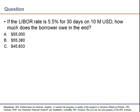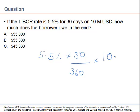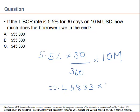Question: If the LIBOR rate is 5.5% for 30 days on a $10 million loan, how much does the borrower owe? Since LIBOR is an annualized rate, we convert it: 5.5% multiplied by 30 divided by 360, multiplied by $10 million. This works out to 0.45833% times $10 million, which equals $45,833. So the right answer is option C.